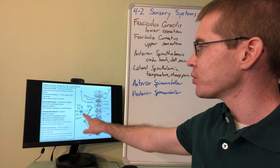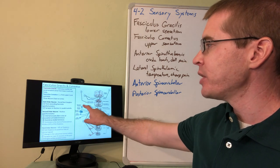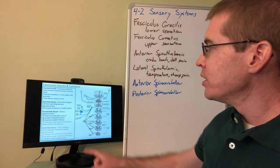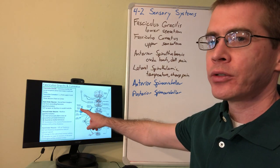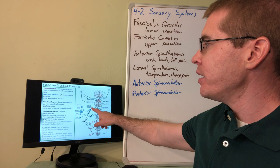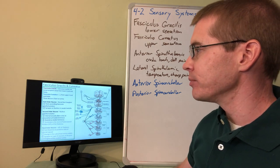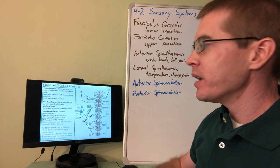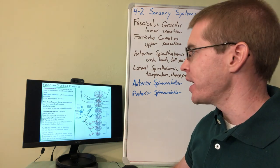So here are those sensory receptors we just talked about, the free nerve endings, Meissner's corpuscles, Pacinian corpuscles, et cetera. Those are part of the peripheral process of a dorsal root ganglion. The central process of that dorsal root ganglion is going to ascend in one of these different tracts.